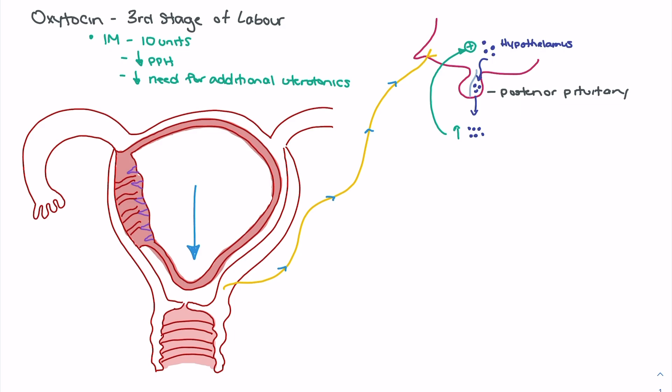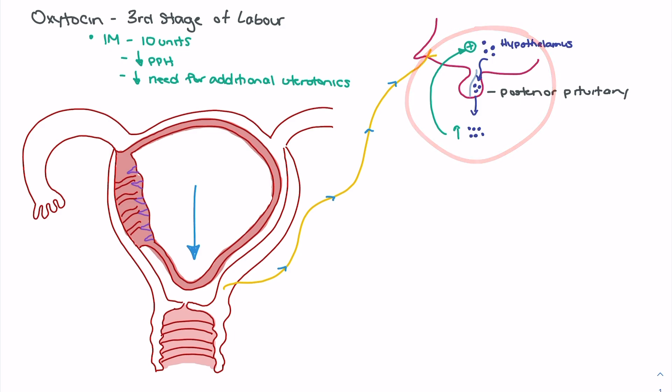As the fetus engages more and more into the pelvis, we see more stimulation of those nerve fibers, which leads to further stimulation of the hypothalamus and pituitary gland to release oxytocin. Additionally, uterine contractions also stimulate those nerve fibers to further release oxytocin from the posterior pituitary. The fetus moving through the birth canal and causing stretch of those receptors leads to oxytocin release, which leads to increased uterine contraction, which in turn stimulates more nerve fiber activation and more oxytocin release — part of that positive feedback loop.